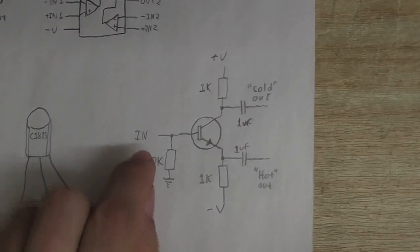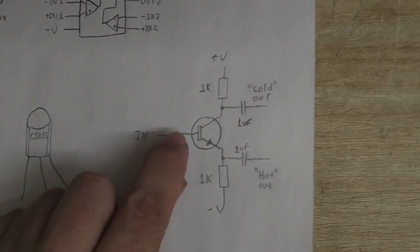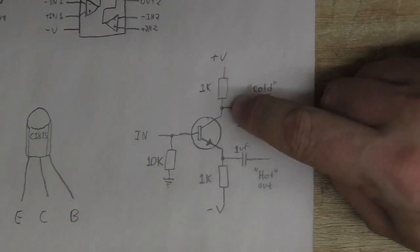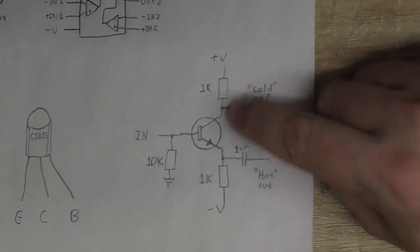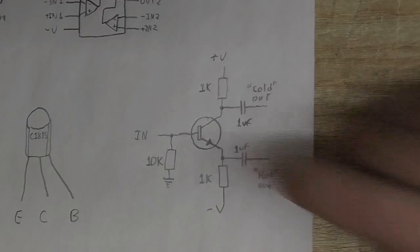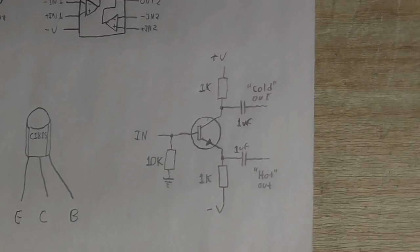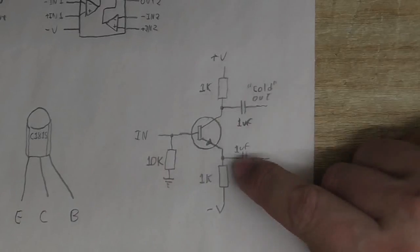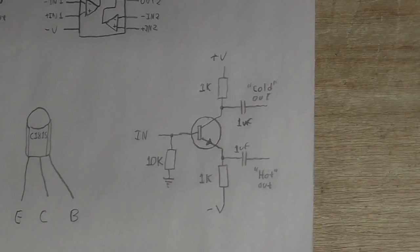So, as the audio signal swings positive, the transistor will conduct more, and the voltage here will decrease, and the voltage here will increase, and as the audio signal goes more negative, the transistor will conduct less, so the voltage here will rise, and the voltage here will fall. So, we've effectively turned an unbalanced signal into a balanced signal. Okay, it's not perfect, but it will do the job.